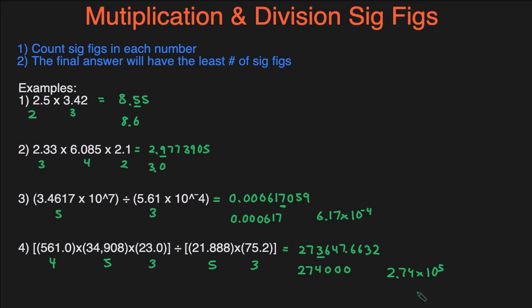And that's it — those are the rules for sig figs when you're dealing with multiplication and division. Just plug the numbers in and get the final answer in your calculator first, then count the number of sig figs in each of the given numbers. The final answer should have the lesser amount of sig figs among all the numbers.